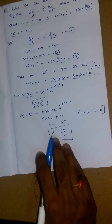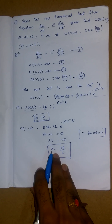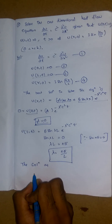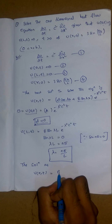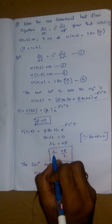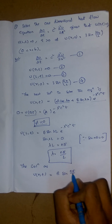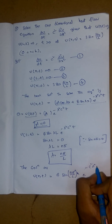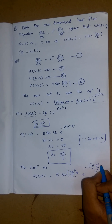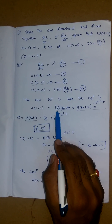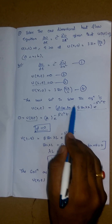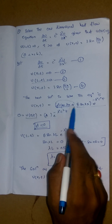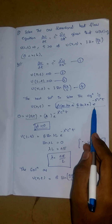Substituting λ = nπ/L into the solution, we get u(x,t) = B sin(nπx/L) · e^(−c²n²π²t/L²). Note that the A cos term vanishes since A = 0, so only the B sine term and the exponential remain.